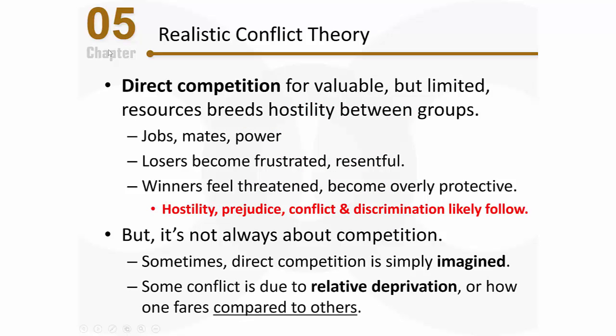Some conflict between groups is due to what we call relative deprivation — how people make relative comparisons about how their group is stacking up to another. For example, as Black Americans become more successful, some white people may feel that their relative status as a privileged class is in jeopardy, causing them to feel threatened and develop hostility toward the group posing that perceived threat.